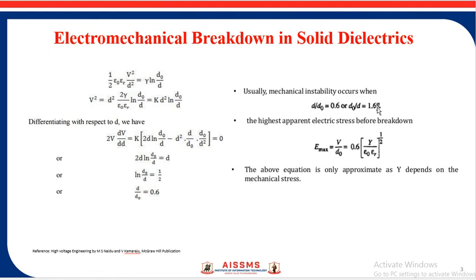And if you substitute this equation, then you will get the highest apparent electric stress before breakdown: Eₘₐₓ = V/D₀ = 0.6√(Y/ε₀εᵣ).